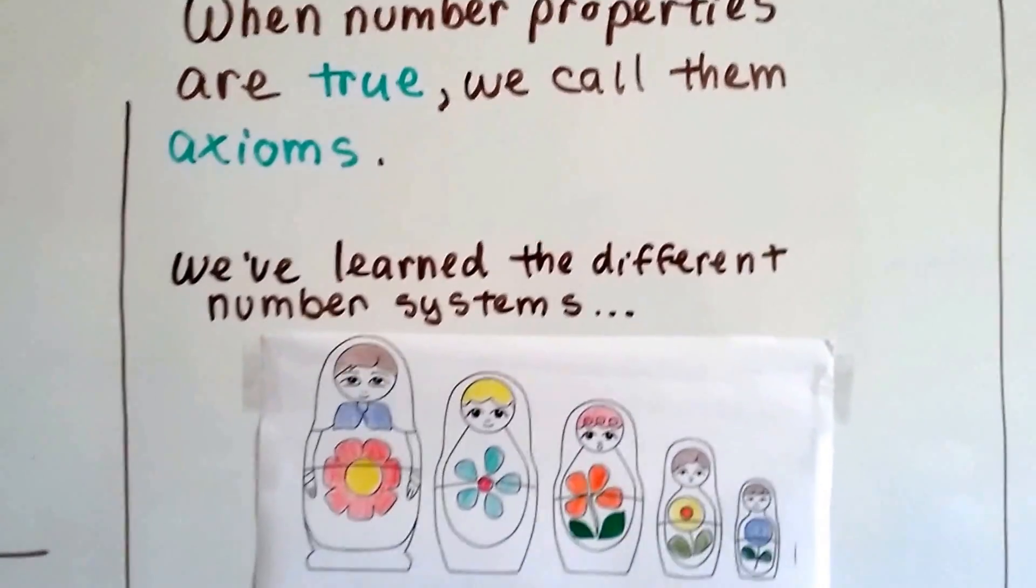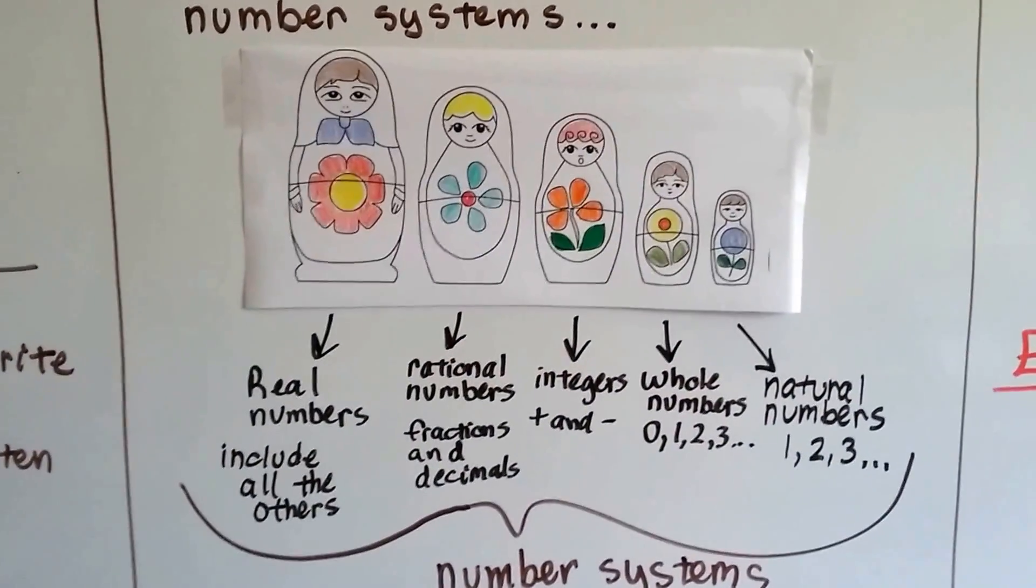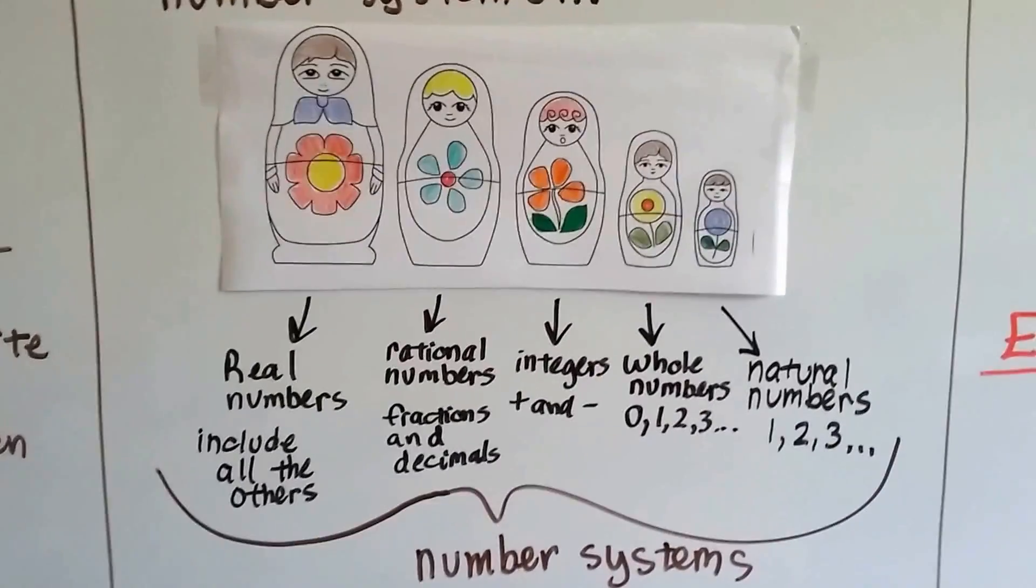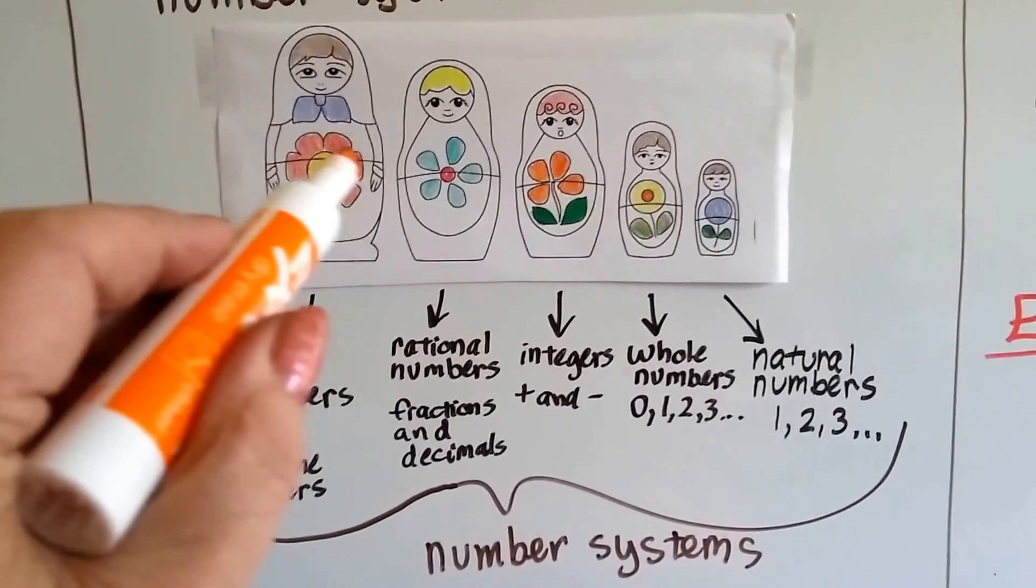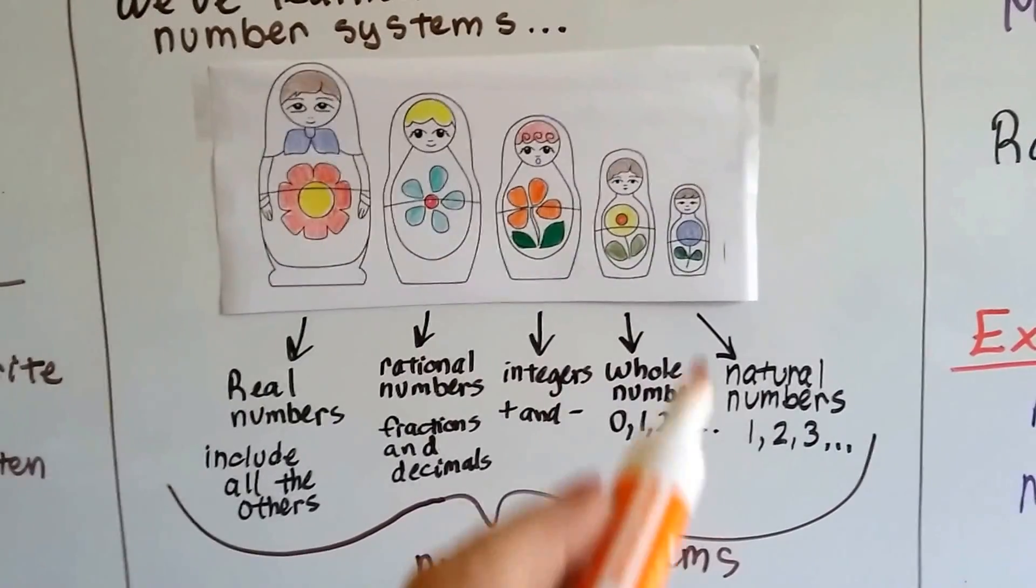And we've learned the different number systems. You remember my nesting dolls from a couple of videos ago? These are like little Russian dolls and they open up in the middle right here. See? And you can take the top off.